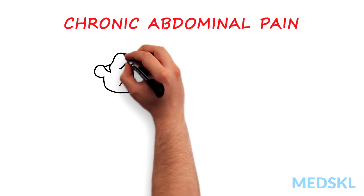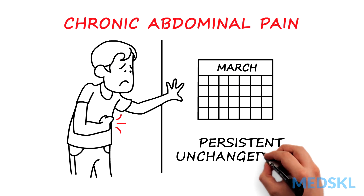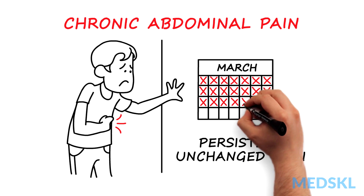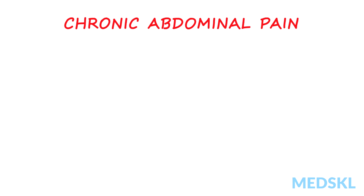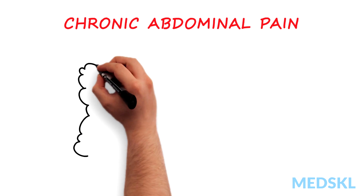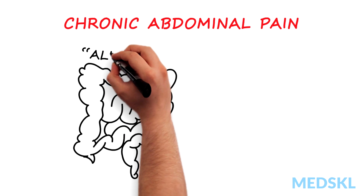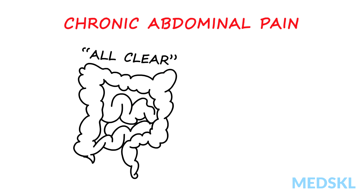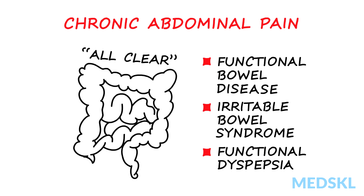Chronic abdominal pain can be defined as pain that persists unchanged for several weeks or longer. This pain can be described as constant or intermittent. Most cases of chronic abdominal pain are functional with no demonstrable organic abnormality. Common examples of this include functional bowel disease or irritable bowel syndrome and functional dyspepsia.